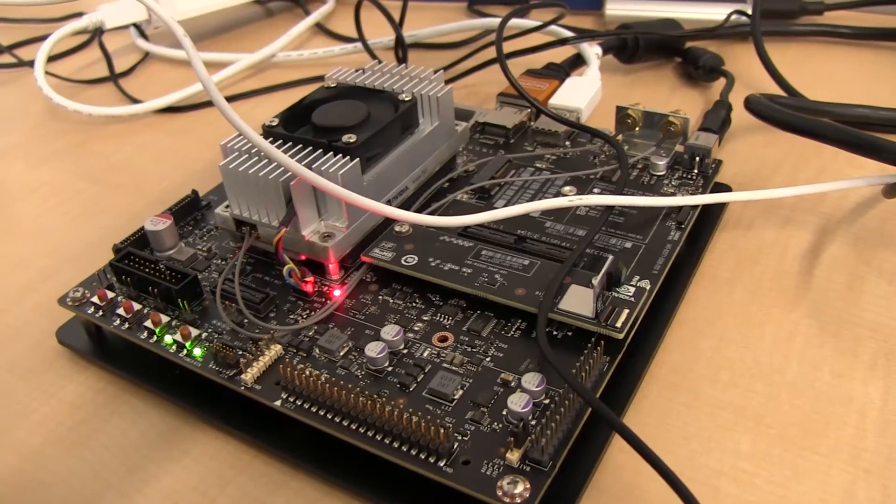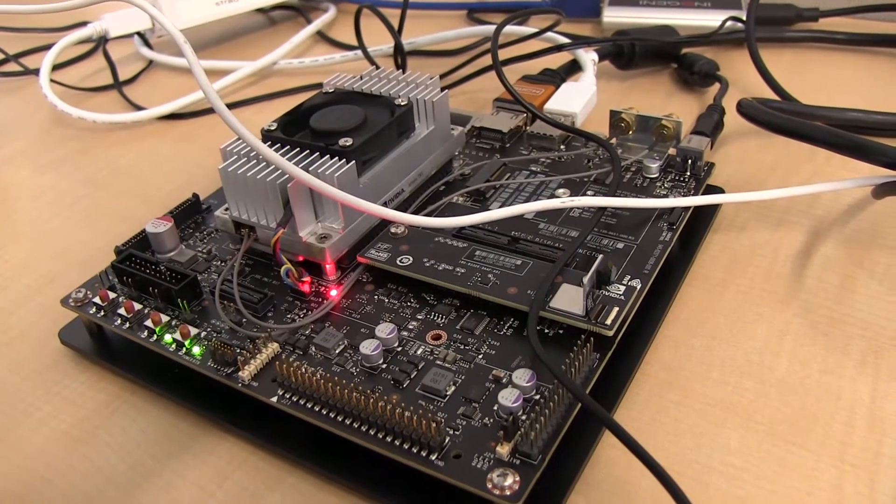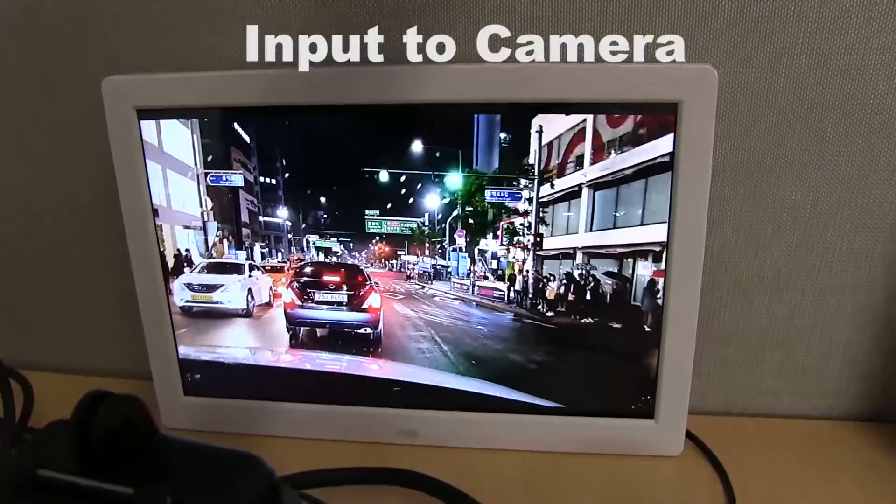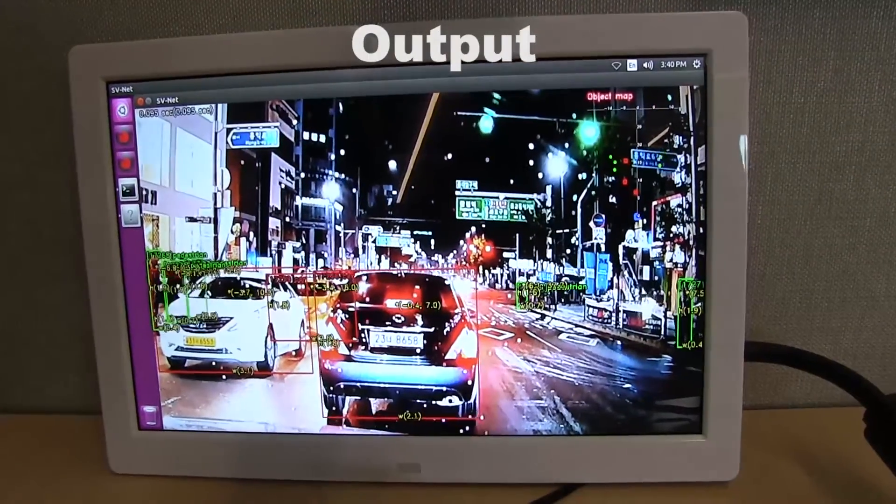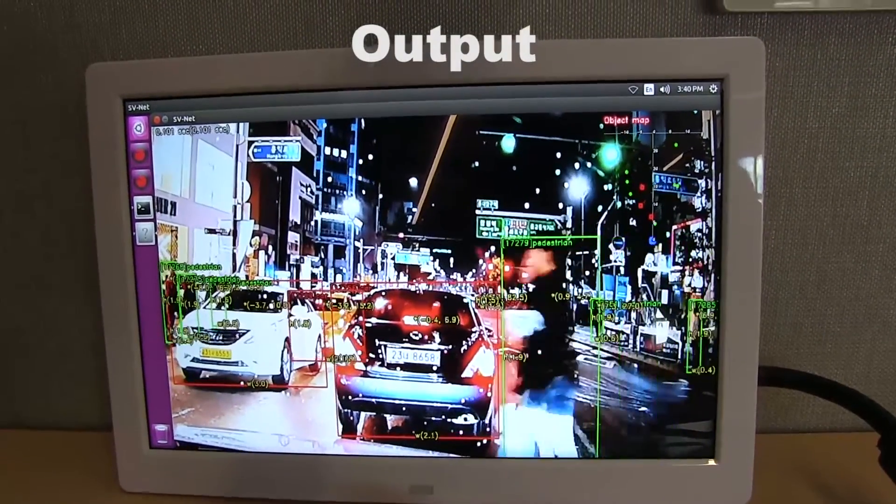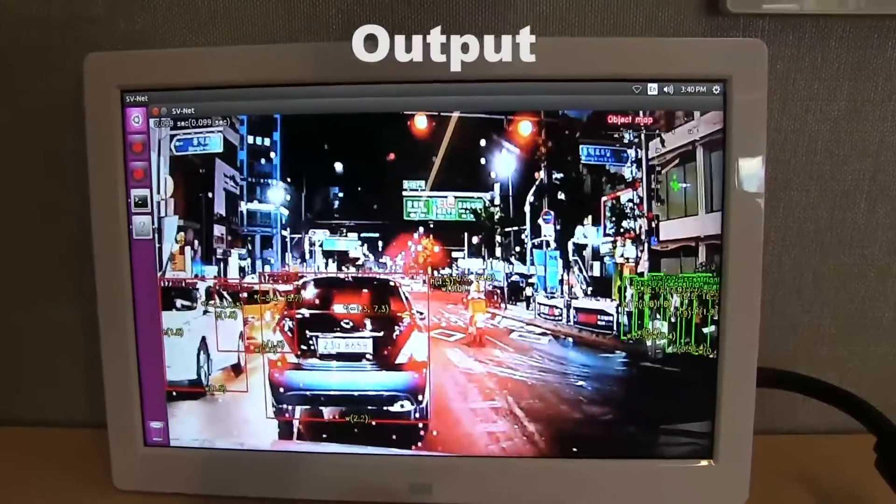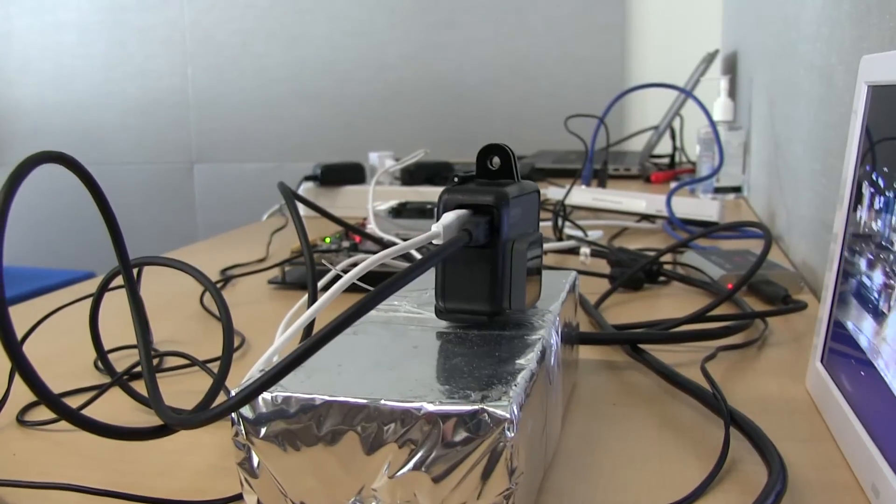We're using NVIDIA's Jetson TX-1 embedded system and showing object detection for six classes of objects including pedestrian, car, motorbike, bus, truck, and containers. We can estimate the size of each object and the distance, X and Y coordinates with respect to my car using a single RGB camera.